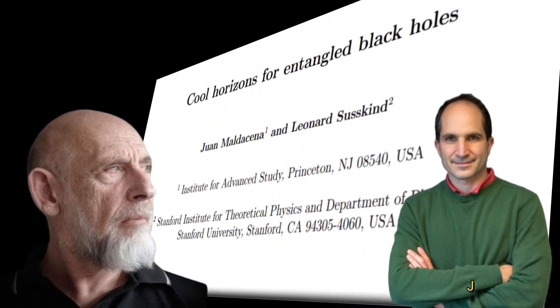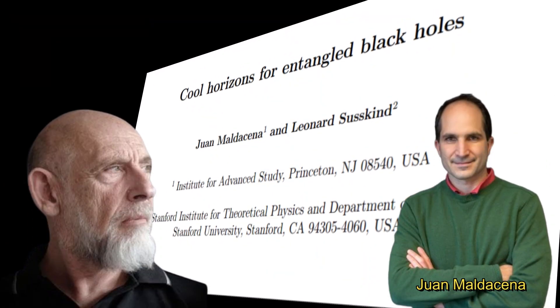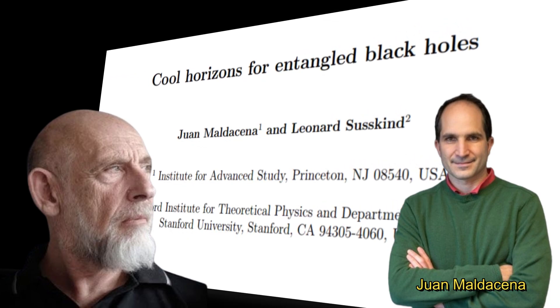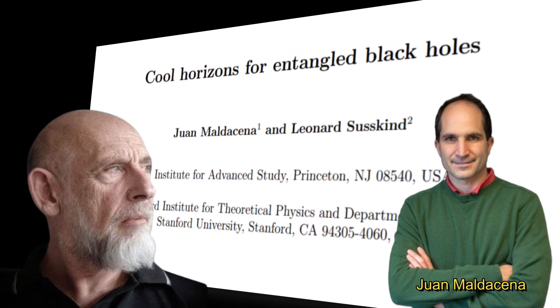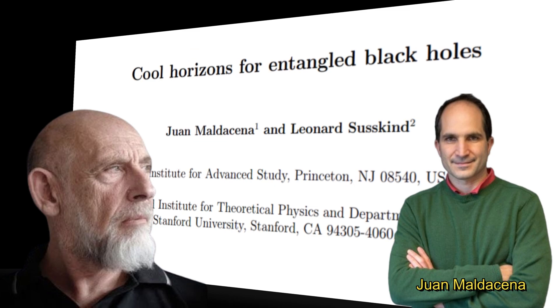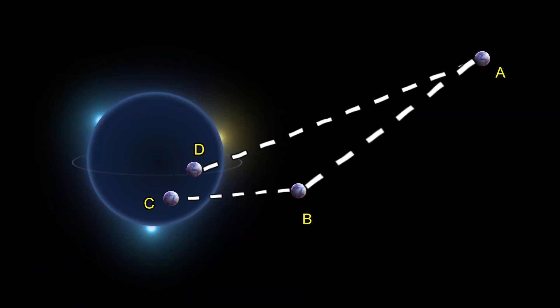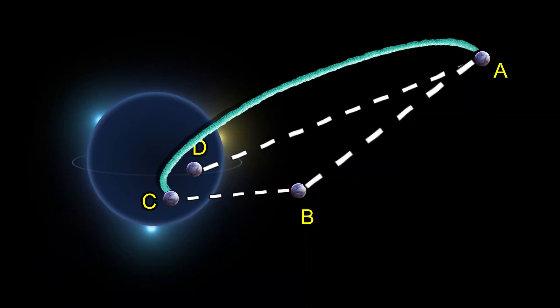In order to counter the firewall proposal and solve the original problem, Suskind and Juan Maldacena gave the EPR equals ER proposal. This proposal says that any two entangled particles are joined by a wormhole — these wormholes can be very small, but they are there. Due to this, A and C are joined by a wormhole and therefore are not independent of each other, and the firewall problem goes away.